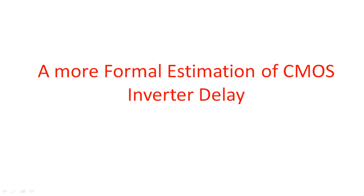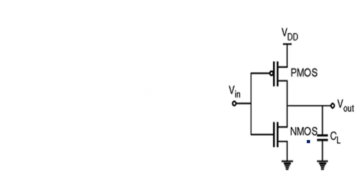In this video I am going to explain about the calculation of rise time and fall time in the CMOS inverter. Consider a circuit like this — a CMOS inverter where the PMOS transistor is in the pull-up place and NMOS transistor is in the pull-down place, with a load capacitor CL at the output. This is the load capacitance, this is the PMOS transistor, and this is the NMOS transistor.